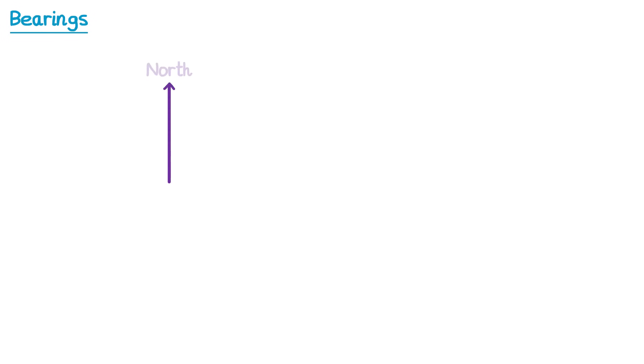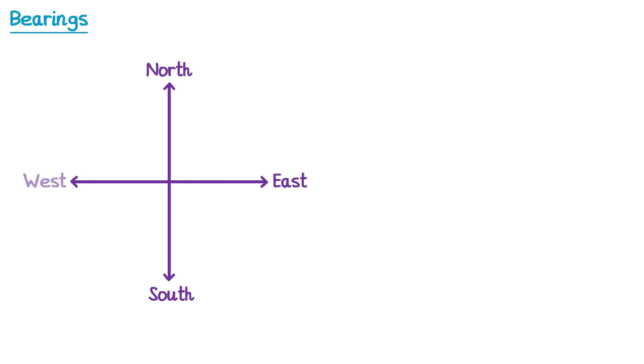On a compass we have the directions north, south, east, and west. A bearing is an angle that indicates a direction, so we're going to assign angles to each of these directions and that will be its bearing.